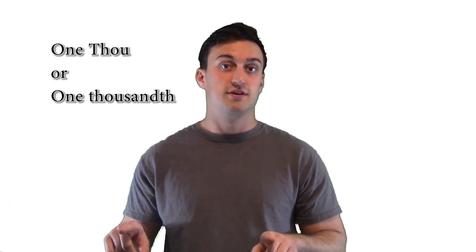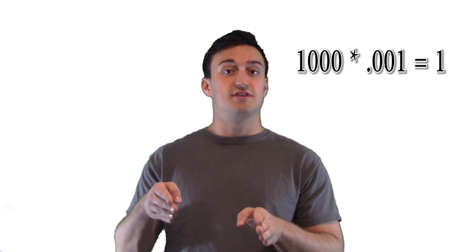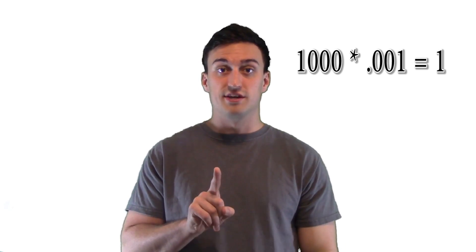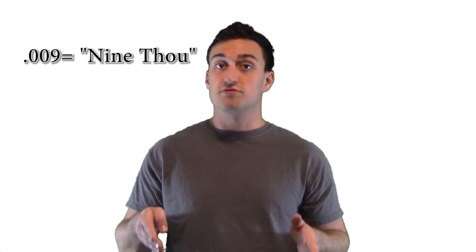What is .001 and how to say it? We're just going to jump into it. .001 is one thou, or one thousandth of an inch. It takes a thousand .001s to equal one inch. If you have something like .009, that's nine thou.